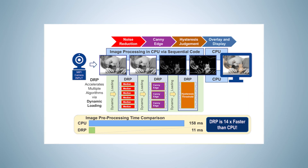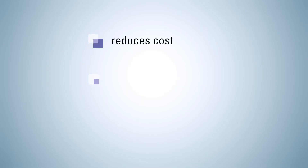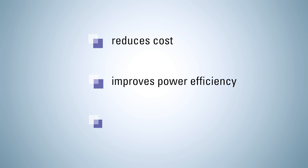DRP provides dedicated hardware acceleration in the form of a coprocessor that can be reconfigured on the fly to boost execution of computation-intensive algorithms by more than 10 times. DRP technology uses dynamic reconfiguration to spatially expand the hardware resources for accelerating a wide range of functions in a fixed amount of silicon. This reduces cost, improves power efficiency, and maintains the flexibility of a software-based system design.